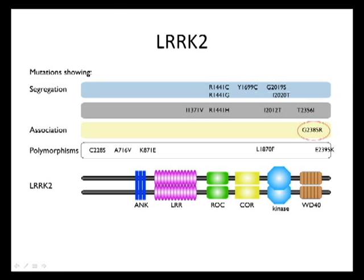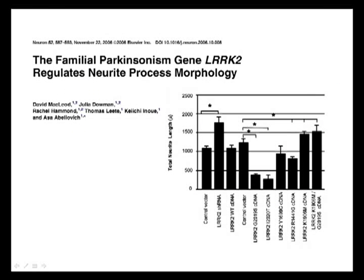The question we're going to address today is how do we assess what these mutations do, particularly in the work that we've published in cell models. One of the assays we've ended up using is that neurons expressing these dominant forms of LRRK2 end up with shorter neurites.